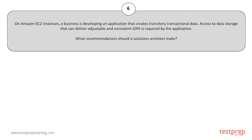Question number six: On Amazon EC2 instances, a business is developing an application that creates transitory transactional data. Access to data storage that can deliver adjustable and consistent IOPS is required by the application. What recommendations should a solutions architect make?